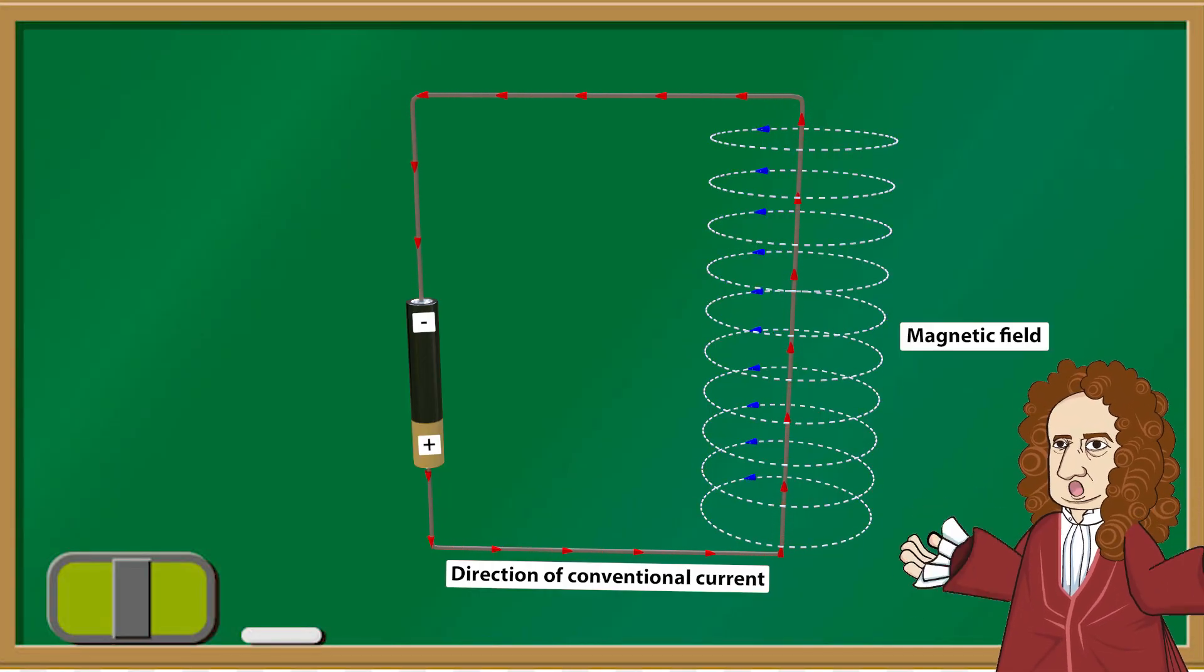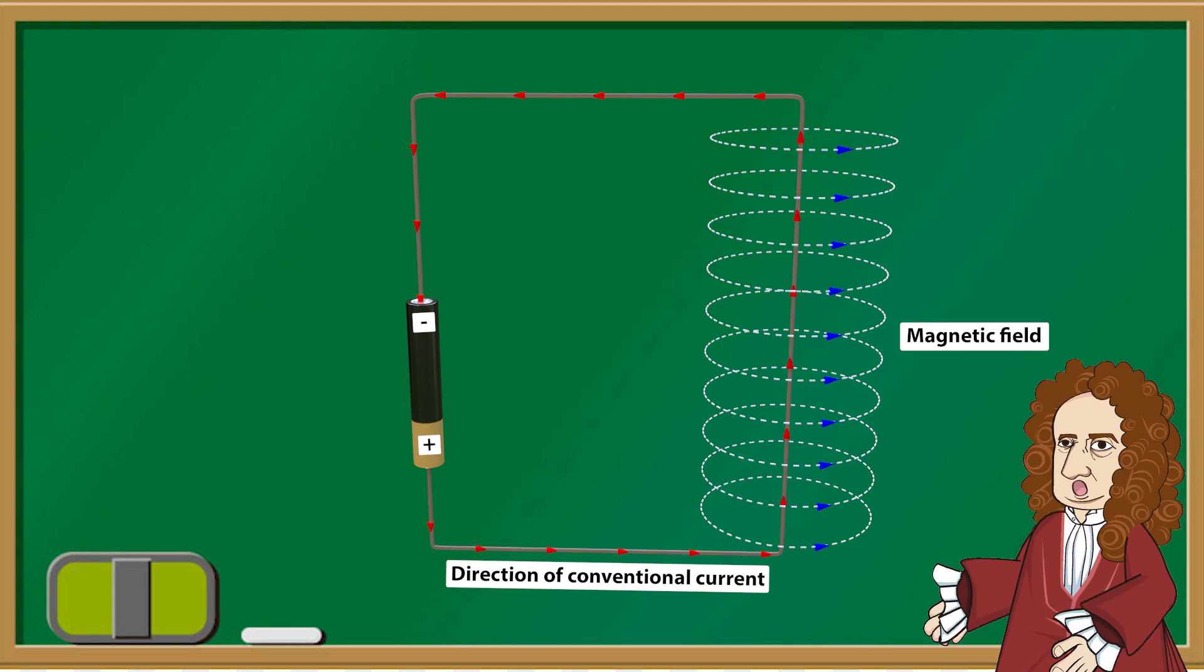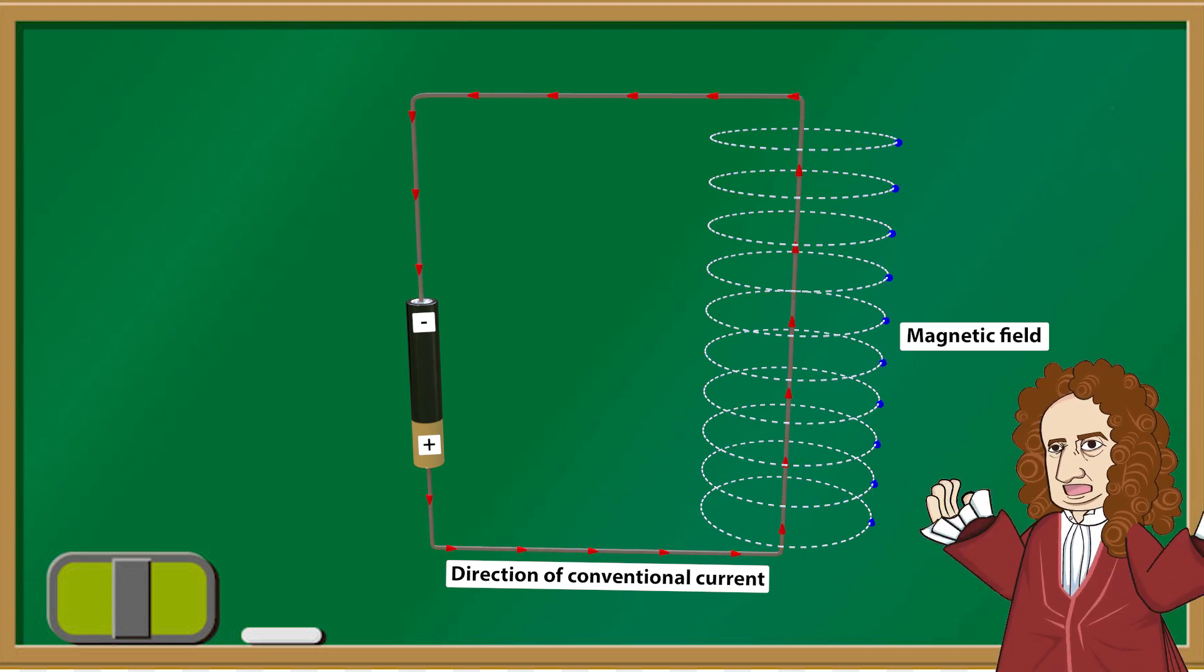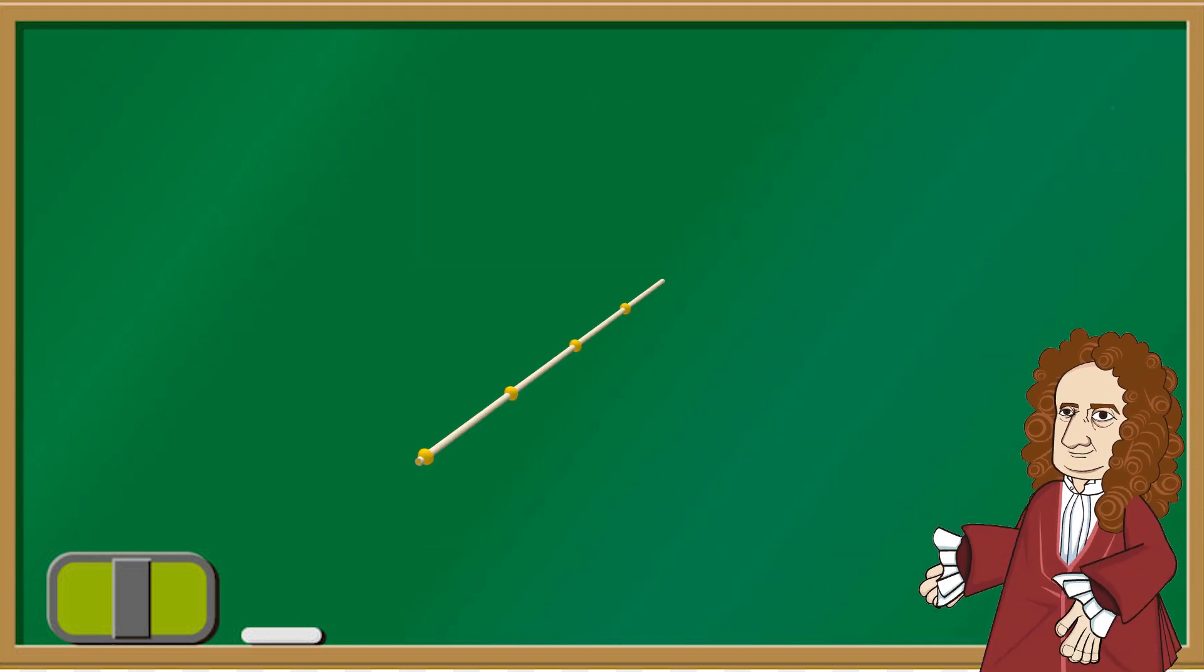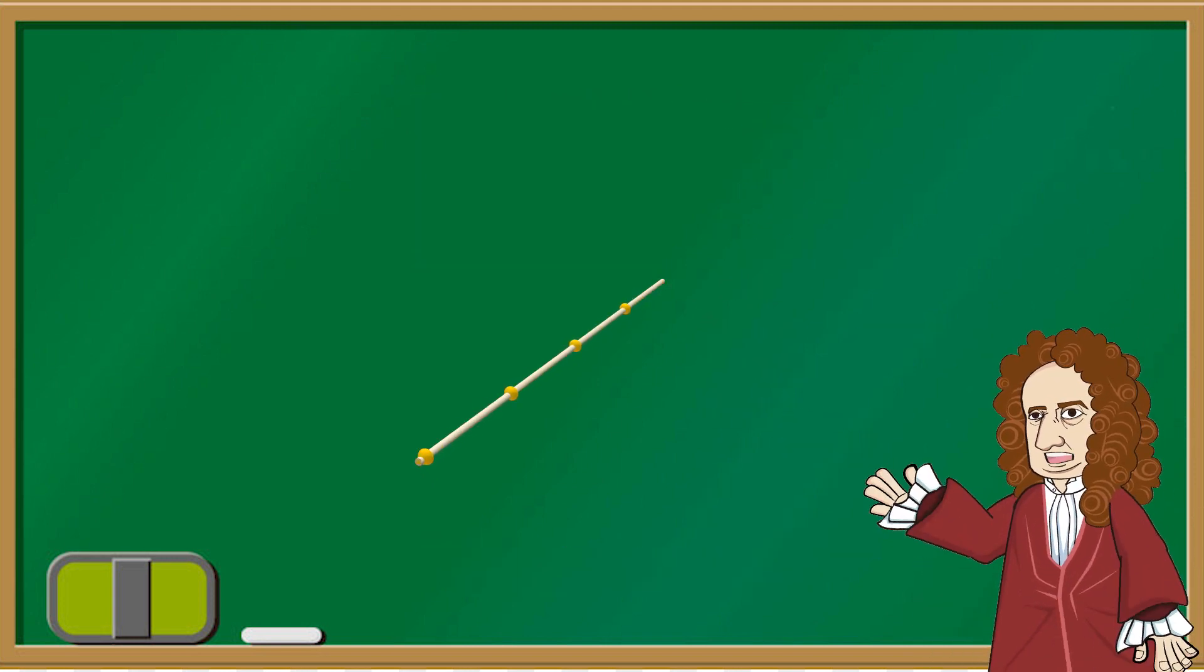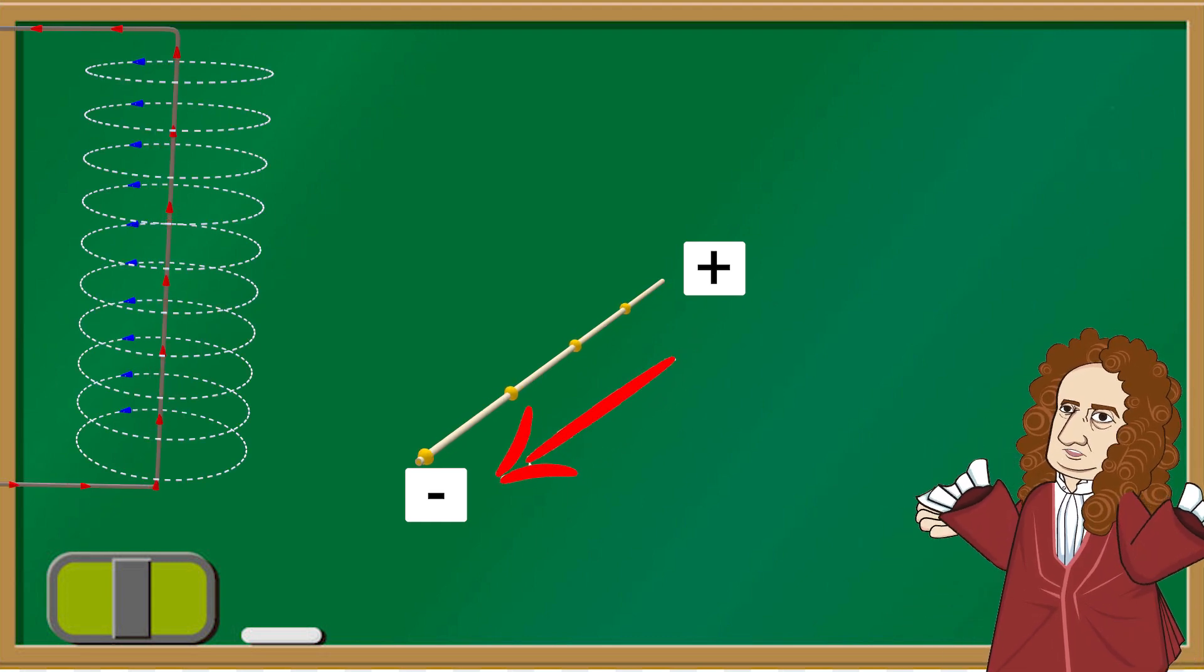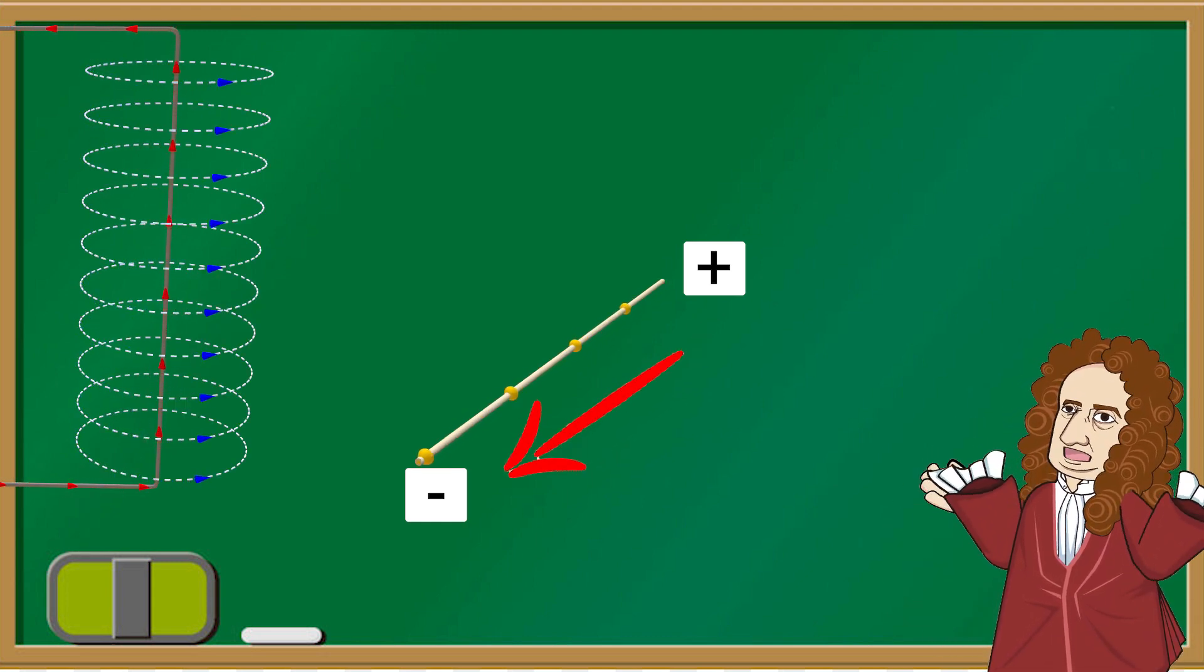We know that magnetic field is produced when a current moves through a wire. What would happen if we placed this wire in another magnetic field? Here we have wire carrying an electric current with direction of conventional current as shown. Remember that there is a magnetic field around this wire but we are not showing.